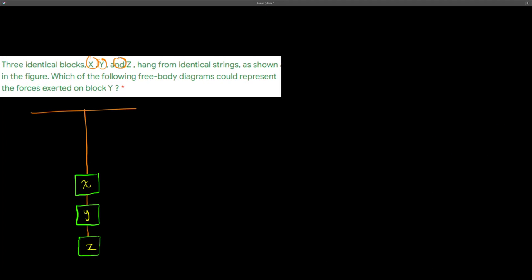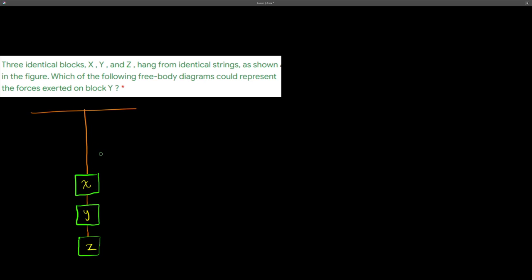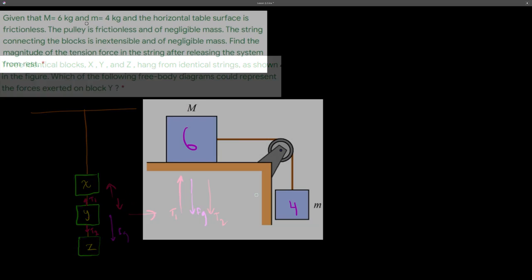Three identical blocks X, Y, and Z hang from identical strings. We need to draw free body diagrams for block Y. Block Y has the force of gravity downwards (FG), tension T1 upwards from the string above, and tension T2 downwards from the string below. So there are three forces acting on block Y: T1 upwards, T2 downwards, and FG downwards.